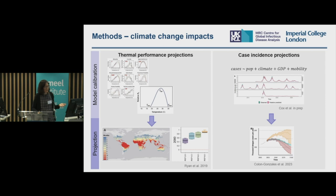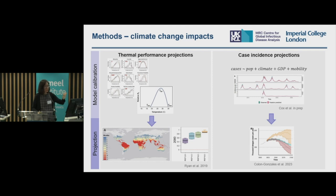How are these estimates generated? There are two broad categories of methods. One is based on the projection of thermal performance curves: these curves can be summarized in terms of transmission intensity, and climate change projections in terms of warming are used to project what the transmission intensity of these viruses will be and how many more people will be exposed. The second class of methods links the number of observed cases in the past with covariates such as population, climate, GDP and mobility. By calibrating models on the past, the strength of association is then used to project forward the number of cases by projecting forward the impact of climate on population, GDP and mobility.